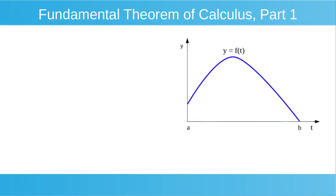We're going to start by looking at the plot on the right-hand side of the screen. Here we've got the plot of the function y equals f, with that function plotted and highlighted in blue. On our horizontal axis we've got the variable t, and on our vertical axis we've got the variable y. Our function f is a function of the variable t, so for a given value of t, our function returns a corresponding value of y.